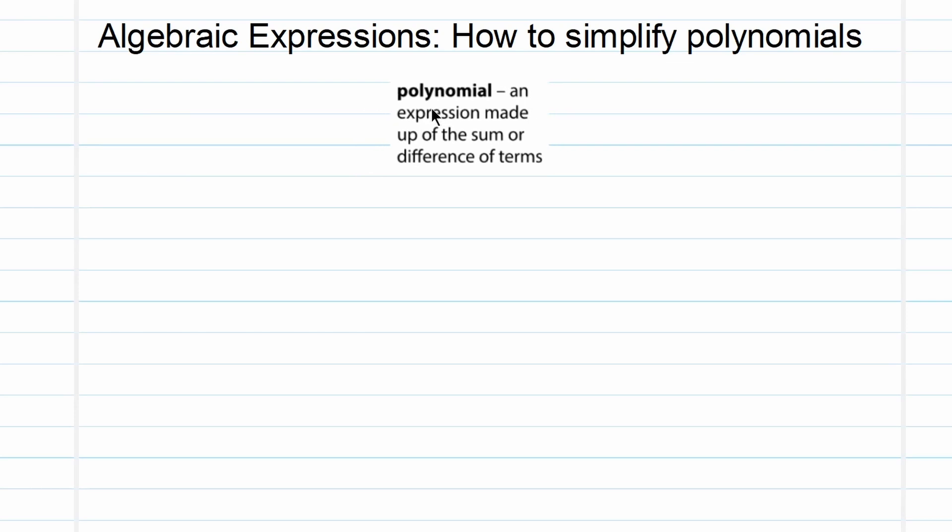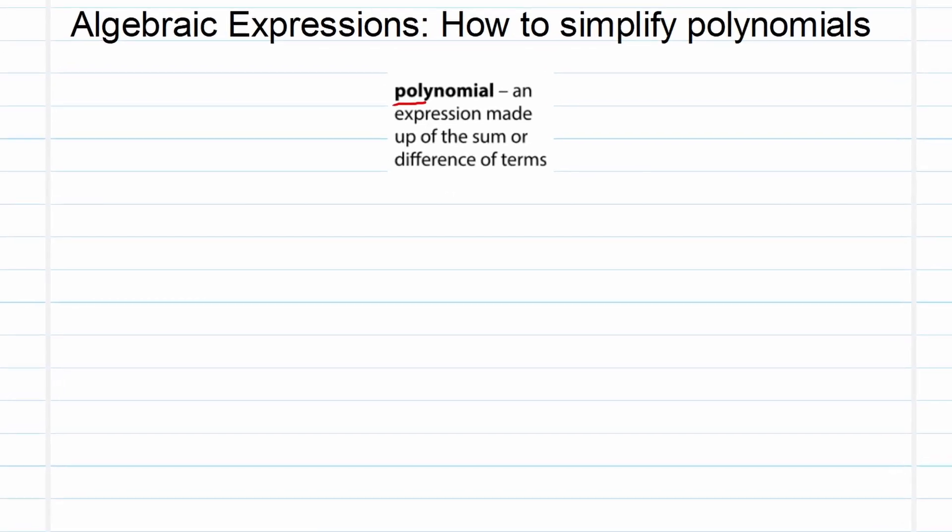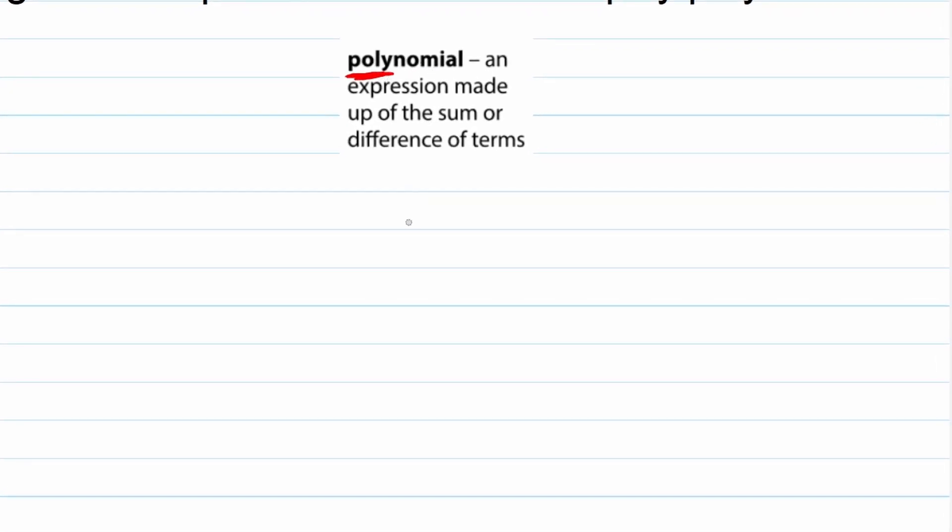So first of all, what is a polynomial? And this will help you to understand it, that poly means many. There you see the word poly means many. Nomial means the amount of terms. So polynomial is an expression made up of the sum or difference of terms.